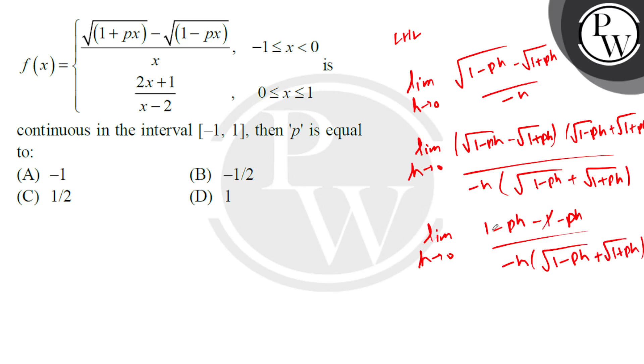Now 1 and -1 cancel, giving -2px over -h. That becomes 2p over √(1-px) + √(1+px). Applying the limit as h→0, and that is the left hand limit. Now we find the right hand limit,